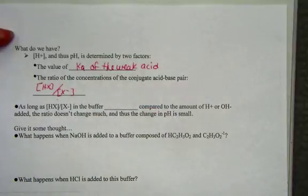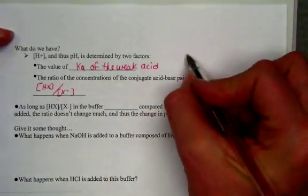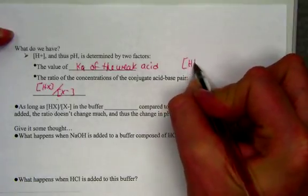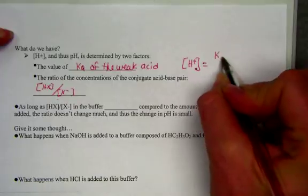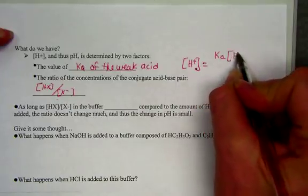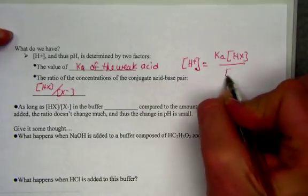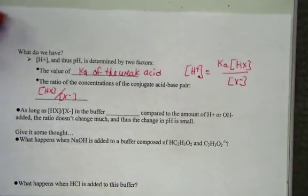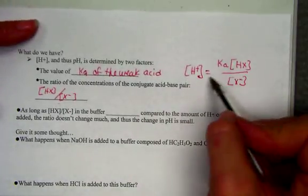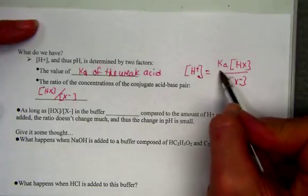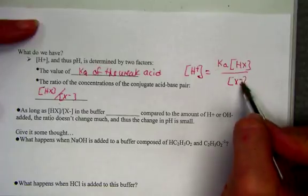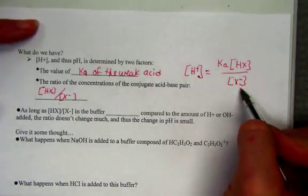And again, that's just simply coming from rearranging the original Ka equation. So from our previous page, if the hydrogen ion can be found by knowing Ka and the conjugate acid base ratio, we could see two factors affecting the pH of our solution. The pH could be affected by the magnitude of the Ka, and it could be affected by the ratio of the concentrations of the acid to its conjugate base.